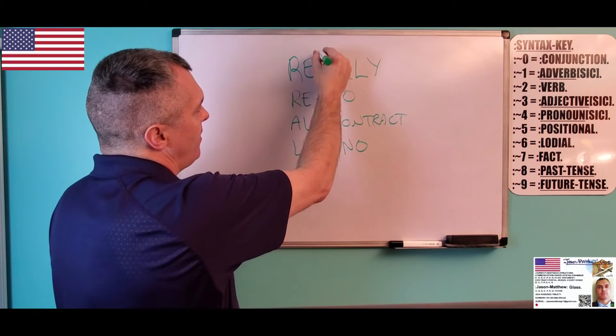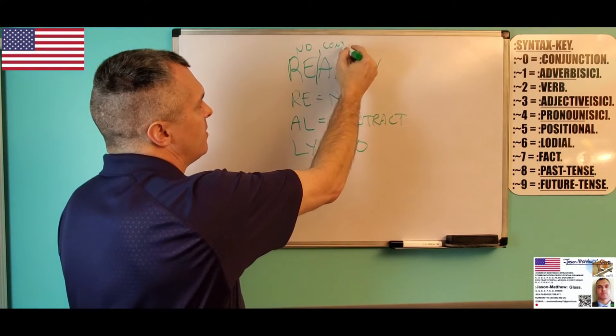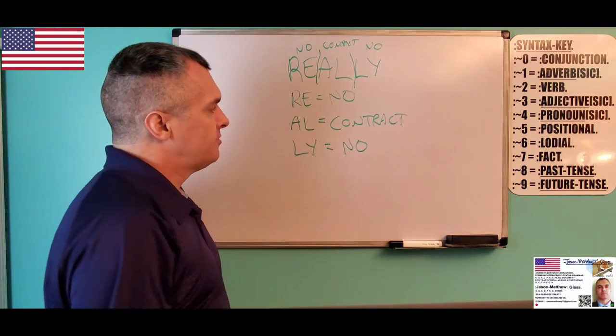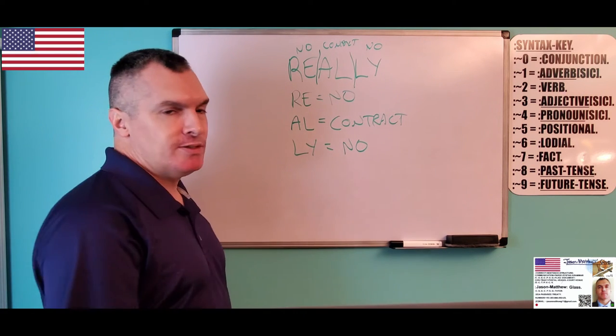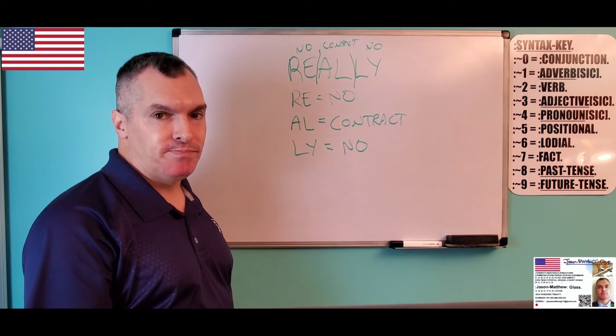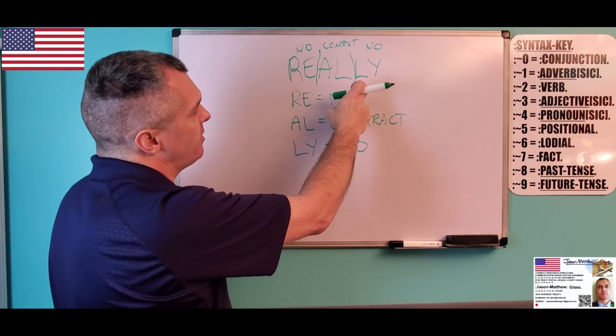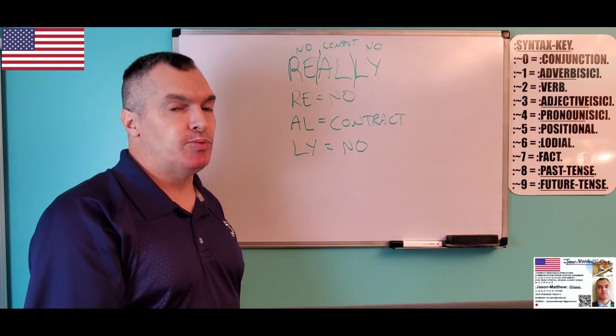So you have R, E, which means no, A, L, contract, sorry about my writing, and then L, Y, which means no. So now, as we know, authority comes at the end. L, Y means no, it's a particle of negation. It is poisoning this word into an adverbial condition of state, pure modification.